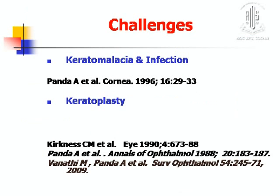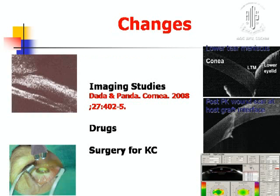The challenges we face in pediatric corneal disorders are keratomalacia treatment, infection treatment, and pediatric keratoplasty. The changes occurring over time include imaging studies such as UBM, anterior segment OCT, pentacam, and various new drugs. Surgery for keratoconus has also changed with collagen cross-linking.